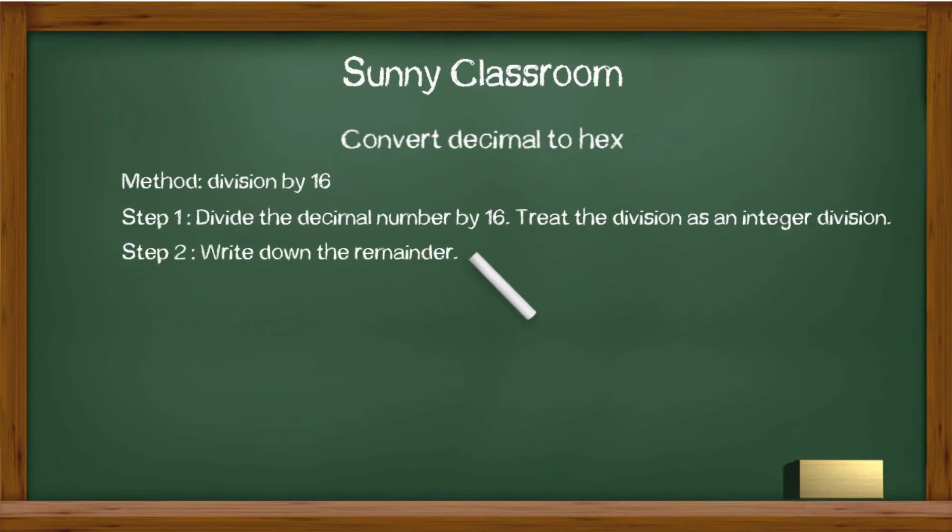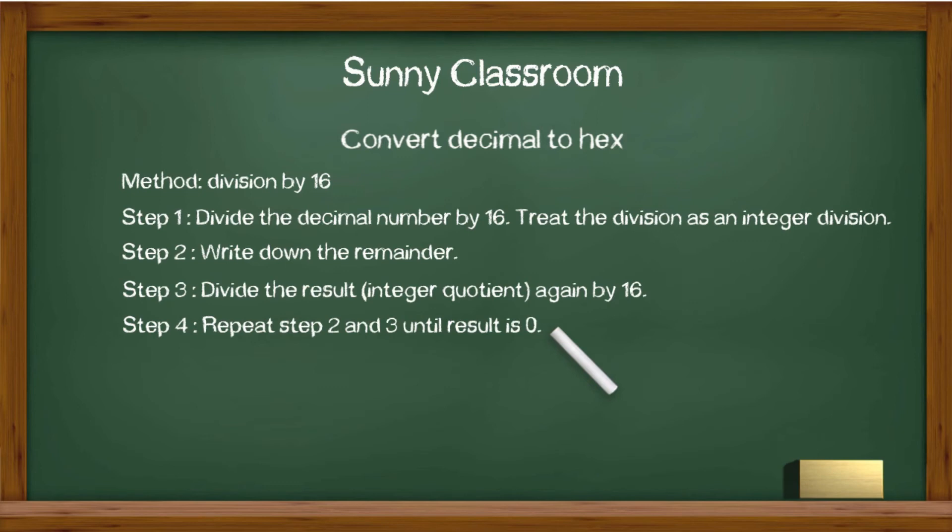Step 2. Write down the remainder. Step 3. Divide the result again by 16. Step 4. Repeat step 2 and 3 until result is 0.